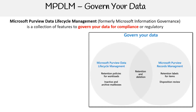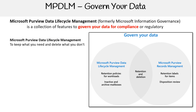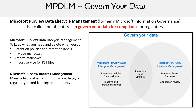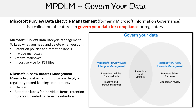Next we have Microsoft Purview Data Lifecycle Management, formerly Microsoft Information Governance, which is a collection of features to govern your data for compliance or regulatory purposes. It keeps what you need and deletes what you don't. Features include Retention Policies and Retention Labels, Inactive Mailboxes, Archive Mailboxes, and Import Service for PST files. For Microsoft Purview Records Management, it manages high-value items for business, legal, or regulatory record-keeping requirements. Features include File Plan, Retention Labels for individual items, Retention Policies for baseline retention, and Disposition Review and Proof of Disposition.